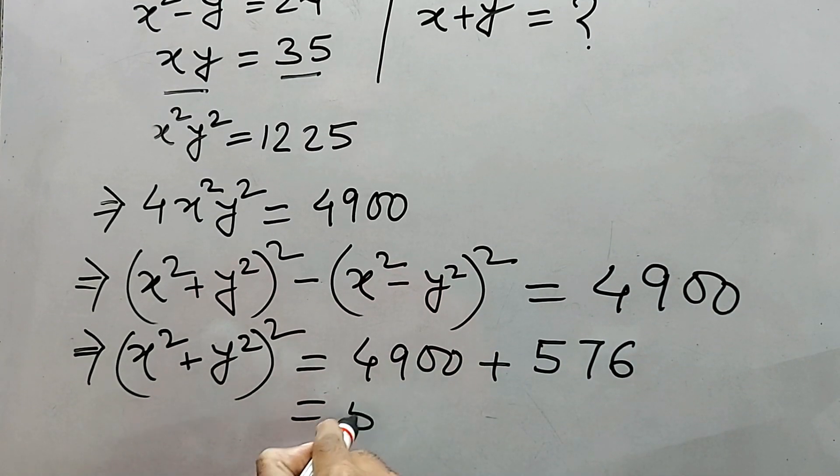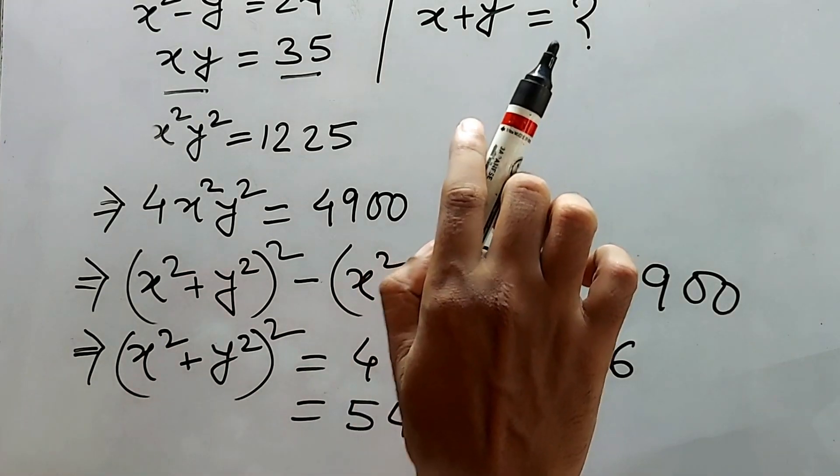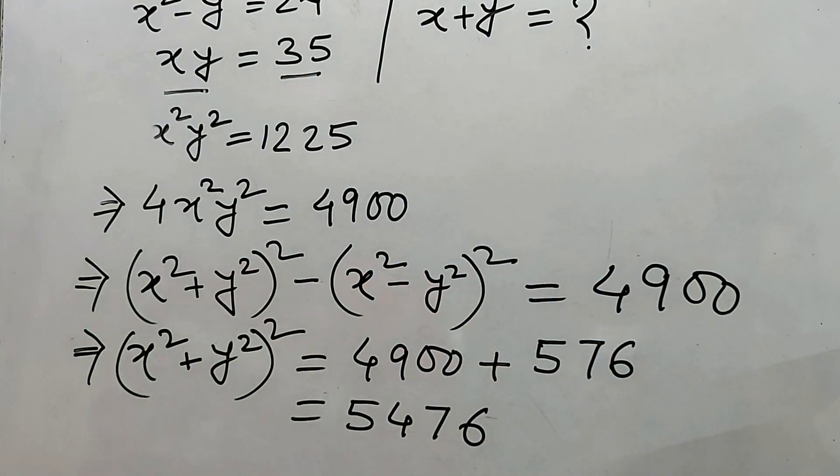And what is the value of this? Yes, definitely 5, 4, 7, 6. Again, how to add easily? See in the I button.